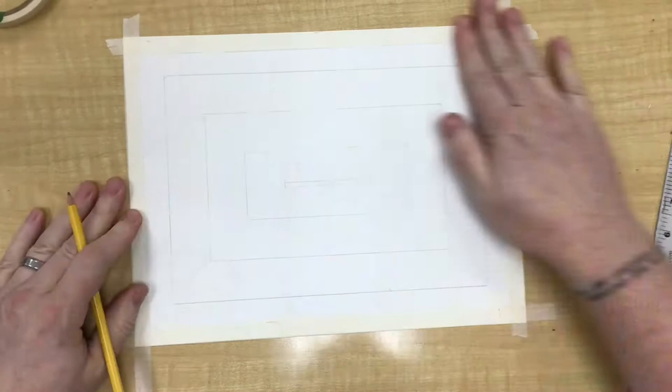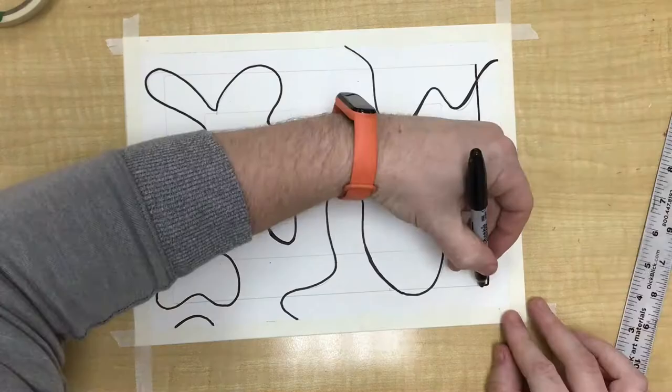Then I made organic shapes covering up those rectangles, organic shapes that are overlapping those concentric rectangles.